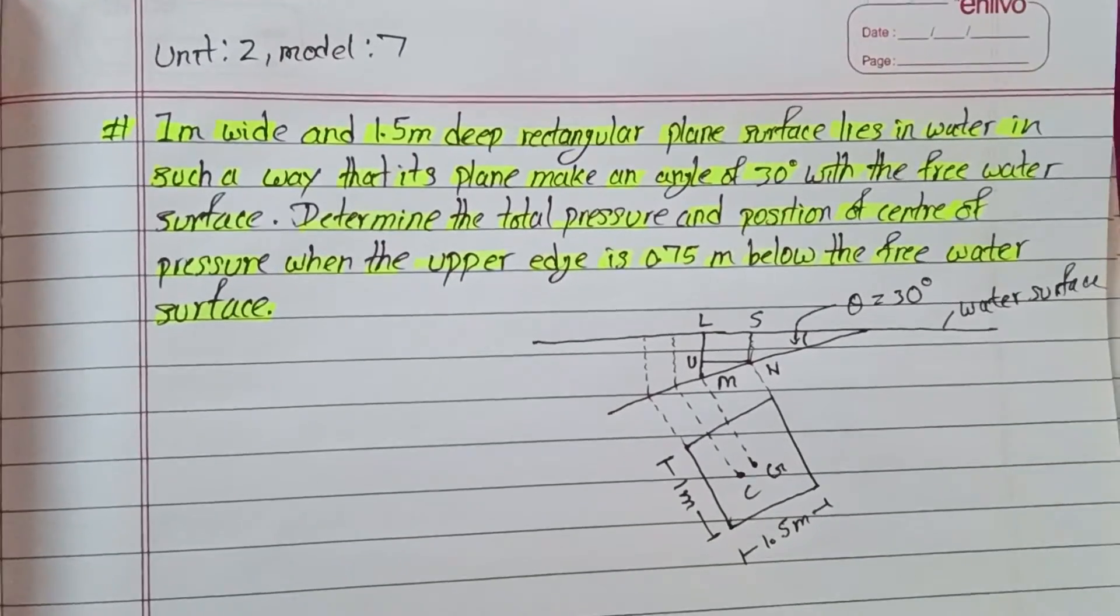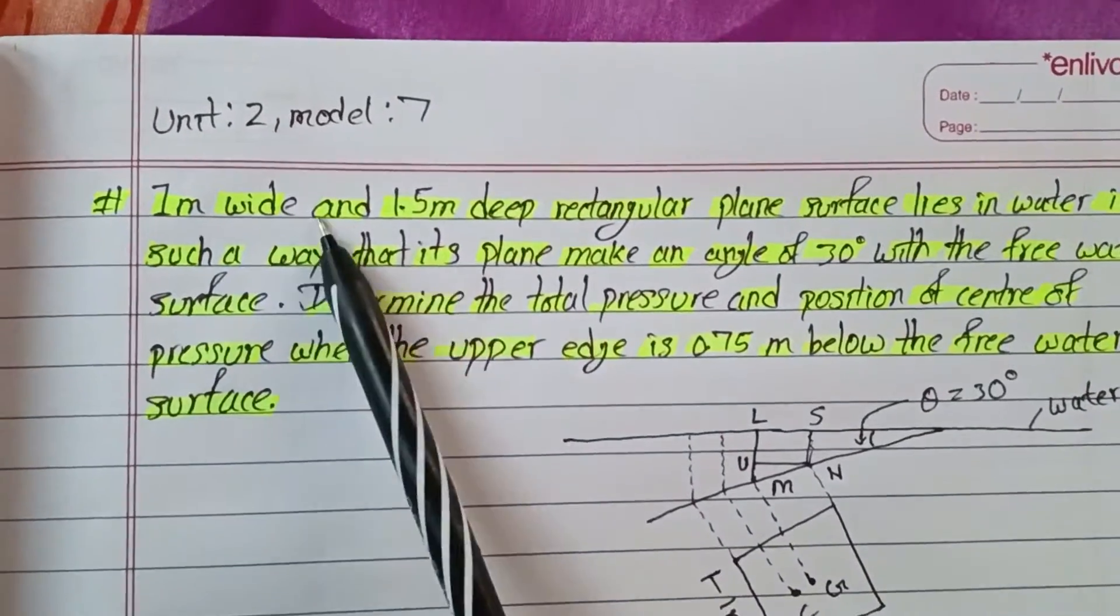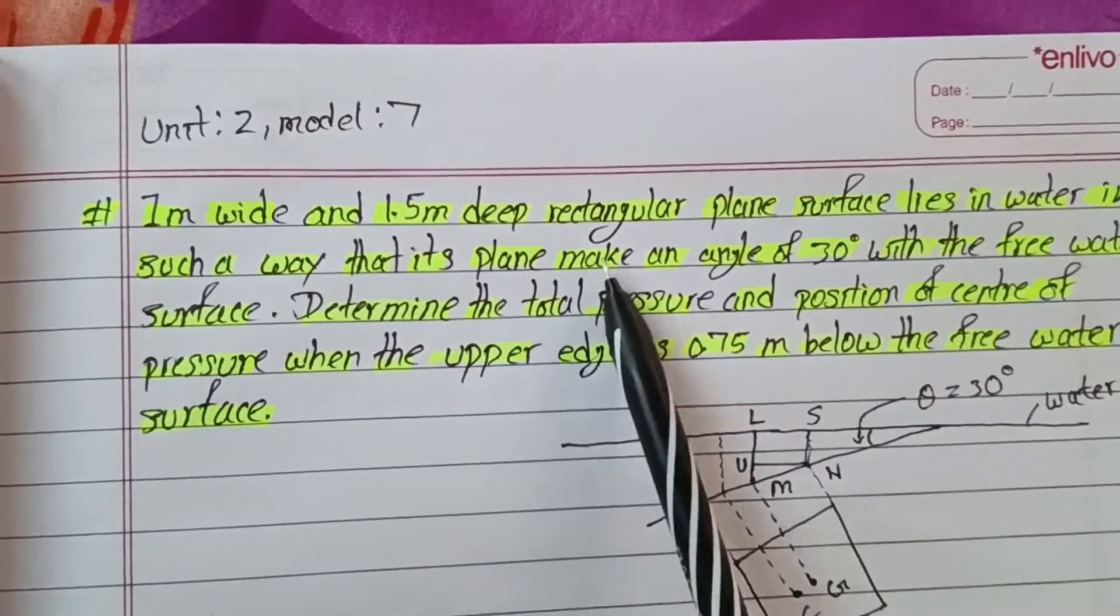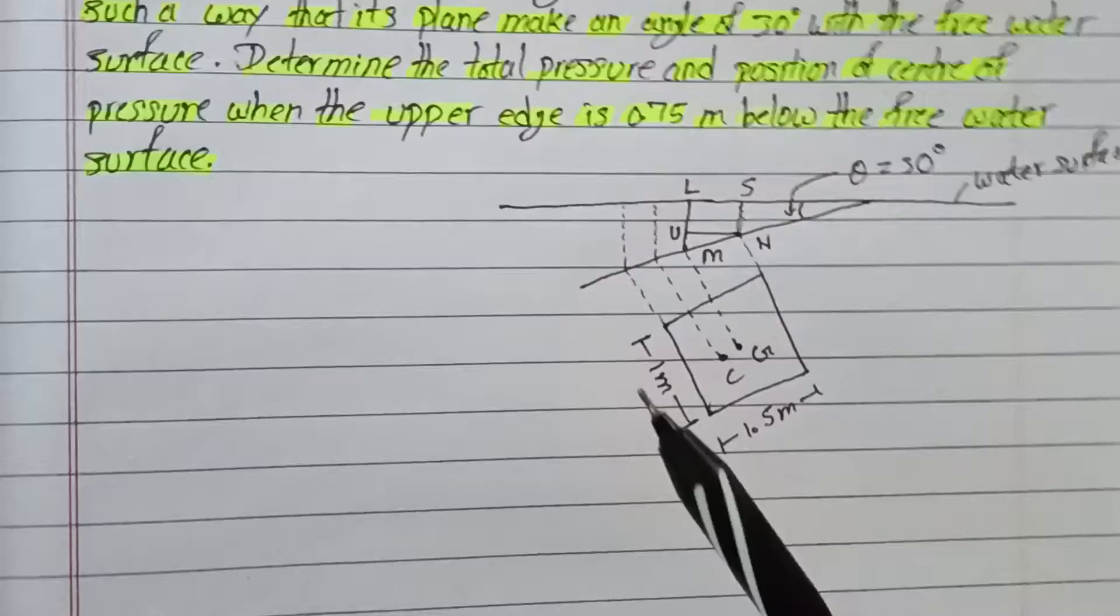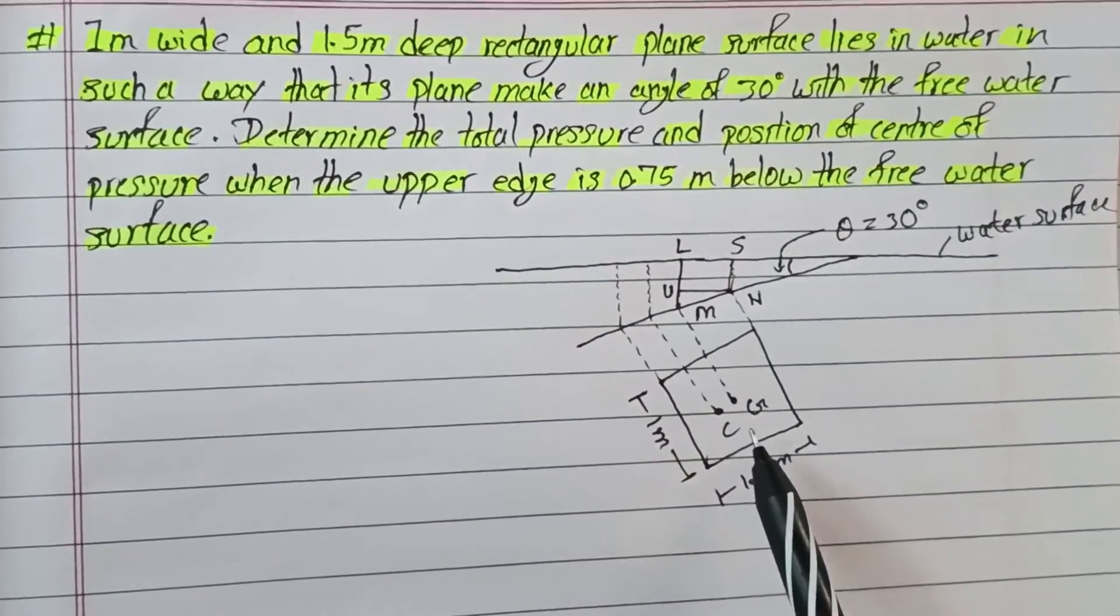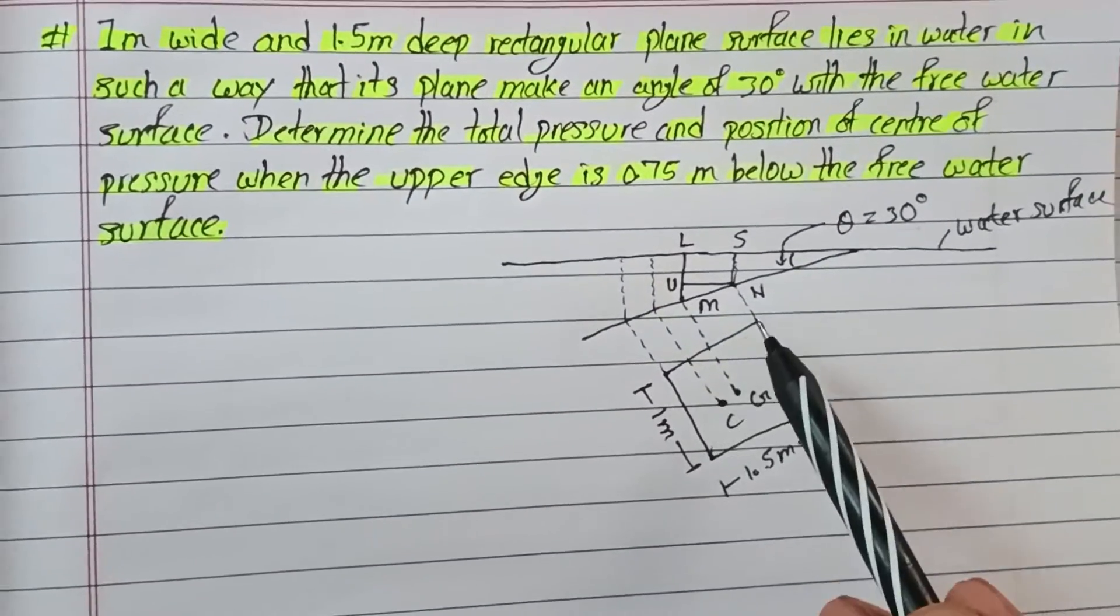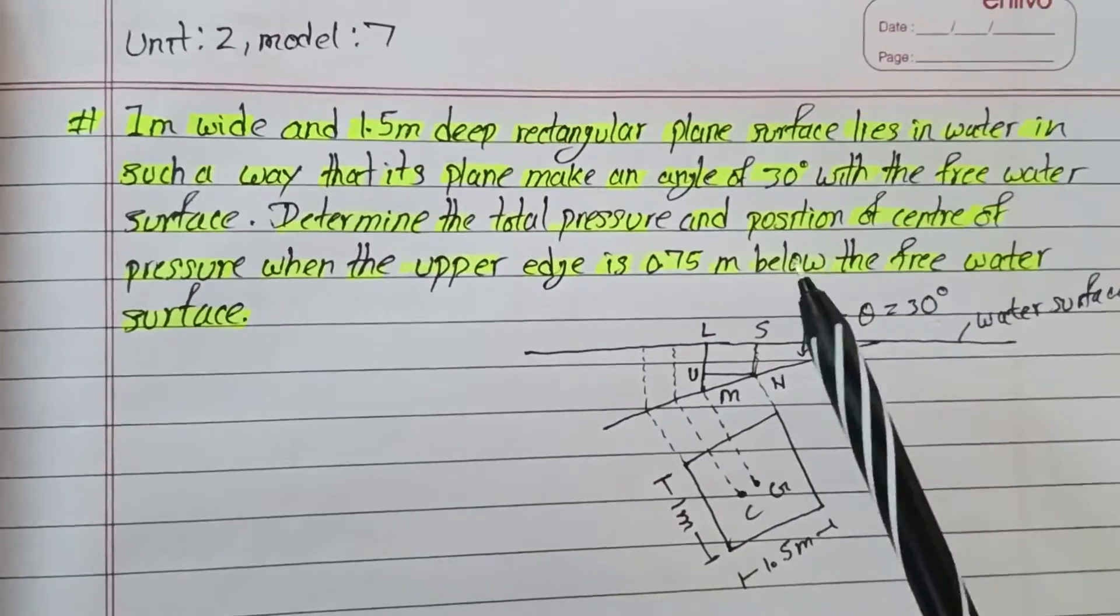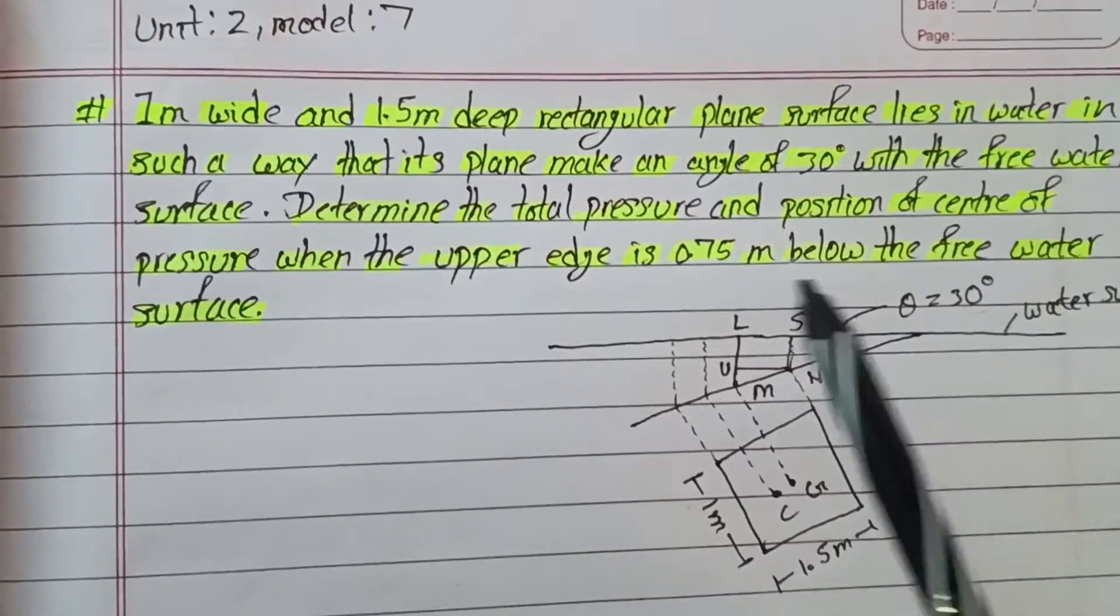The question asks: A 1 meter wide and 1.5 meter deep rectangular plane surface lies in water in such a way that its plane makes an angle of 30 degrees with the free water surface. So we have a rectangular plane surface immersed in water, horizontal water surface, making a 30 degree angle - an inclined immersed surface.